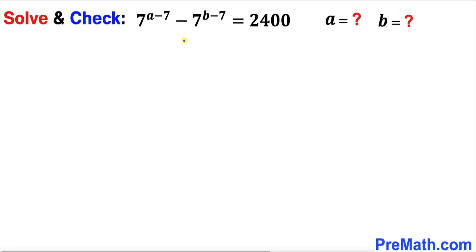Welcome to pre-math. In this video we are going to solve and check this exponential equation: 7 power a minus 7, minus 7 power b minus 7, equals 2400. In other words, we are going to find the value of a and b.